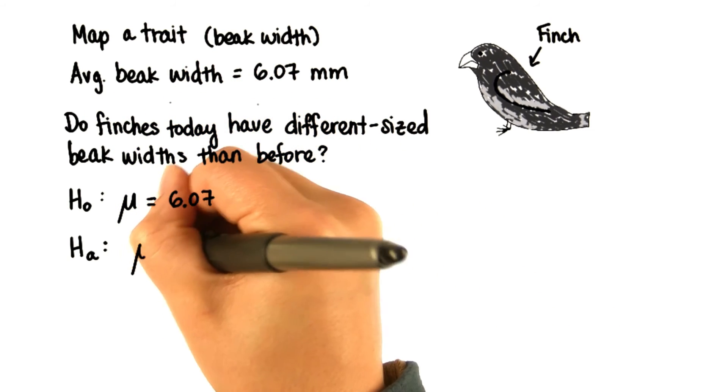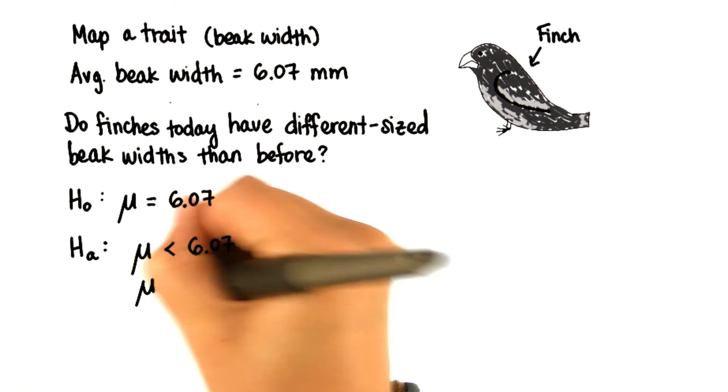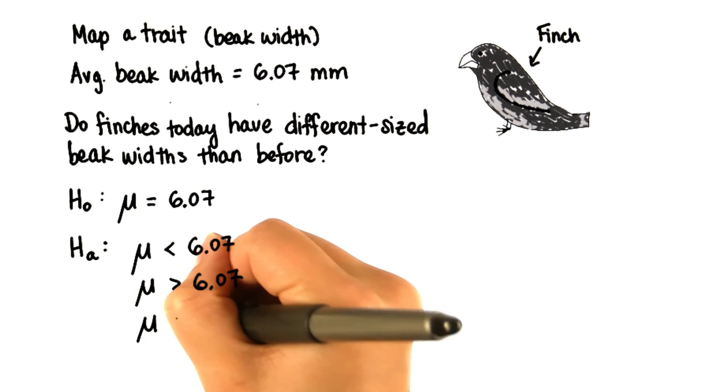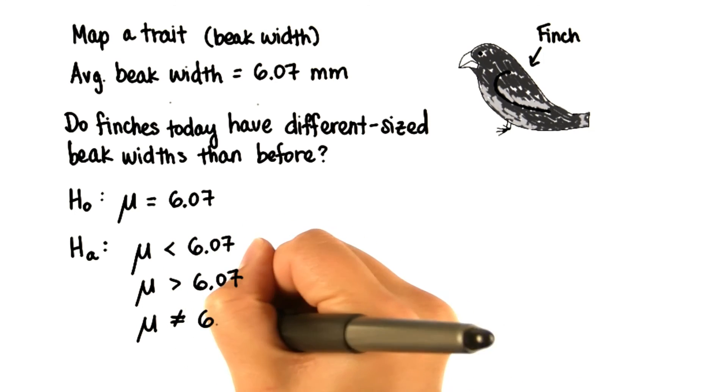And what should the alternative hypothesis be? That mu is less than 6.07, greater than 6.07, or not equal to 6.07.